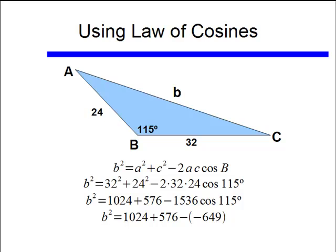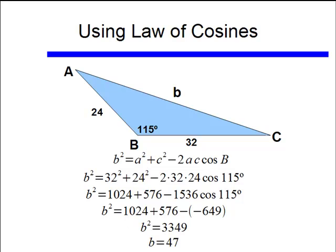Now watch this, remember cosine of 115 degrees, that would be in quadrant 2, and I know cosine is negative in quadrant 2, so I end up subtracting a negative number, so be careful of things like that. Finally I get b squared equaling 3,349, or b approximately equaling 47.